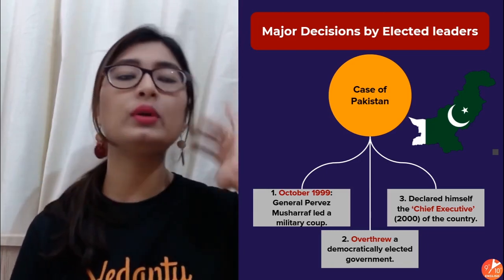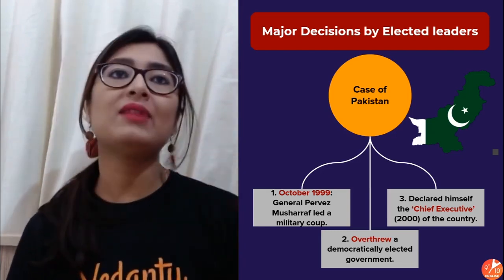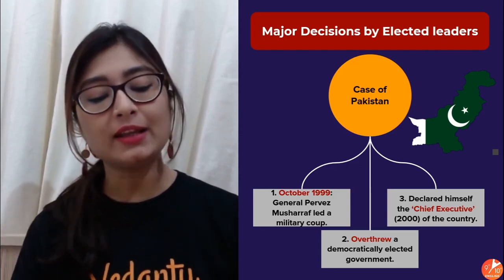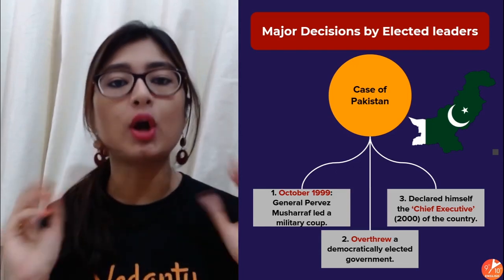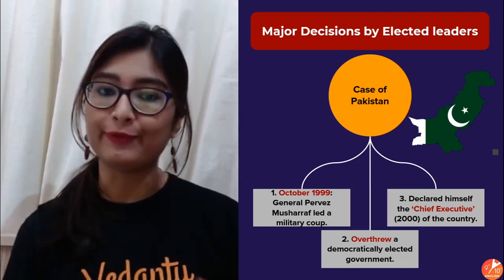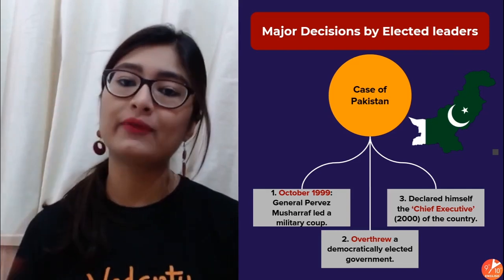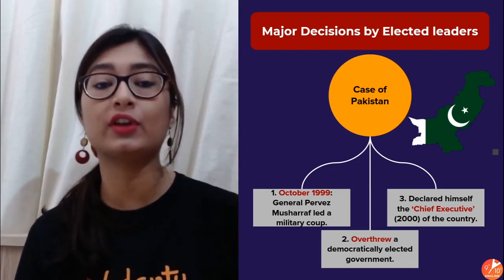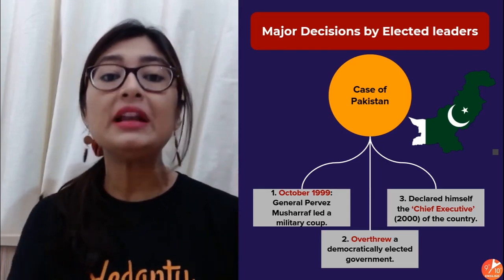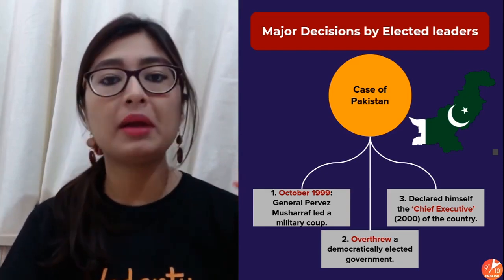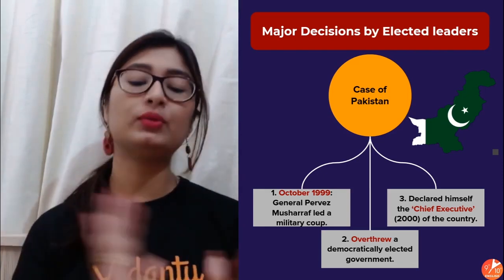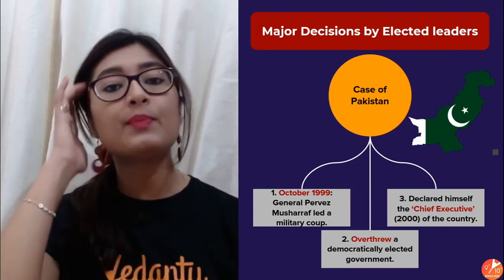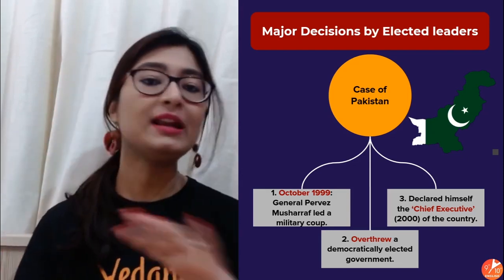He led a military coup, which basically means that with the force of military, he overthrew the existing democratically elected government using violent means and force. So whoever was the head of the state at that time, he went there with military people behind him and either told them to leave the office or face consequences. The person who was the head of state decided to step aside because Musharraf was using the means of military force and exploitation.